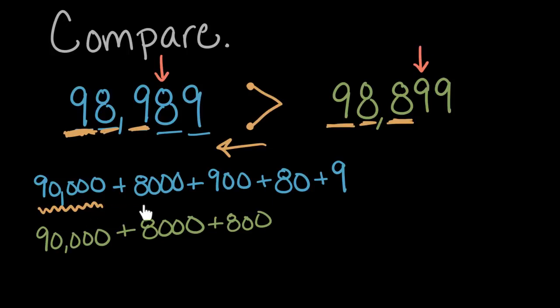So we compare until we find the greatest place value that's different, and then whichever of those has a greater number in that place value is the greater number. Let's try one more.